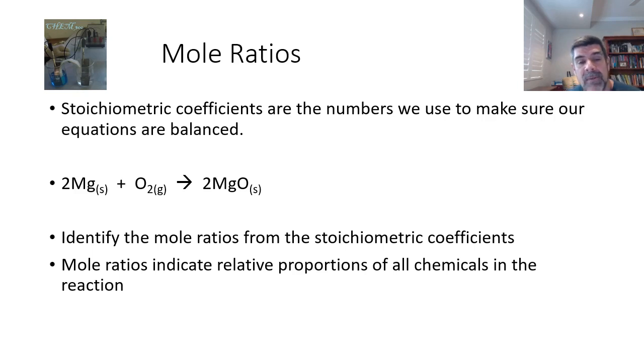So I've got an example here. Magnesium plus oxygen produces magnesium oxide. In order to balance the equation to have two magnesiums here, two oxygens here, I need the two out the front to make sure that I've got two of each on each side.